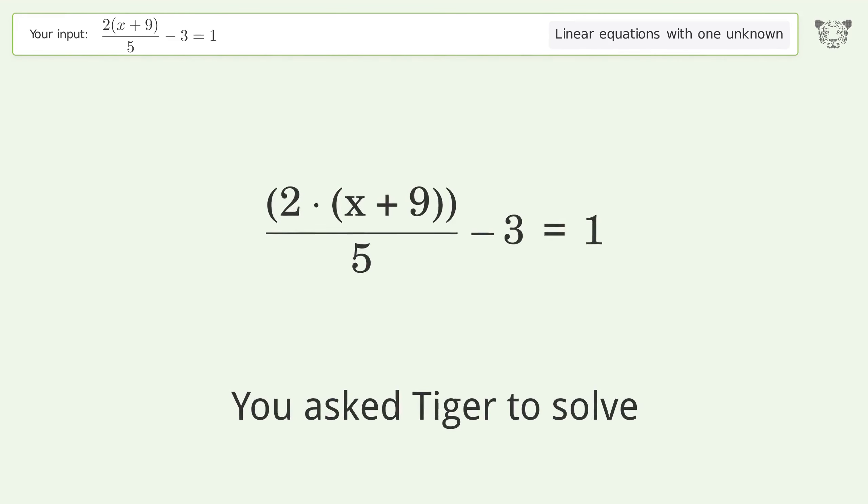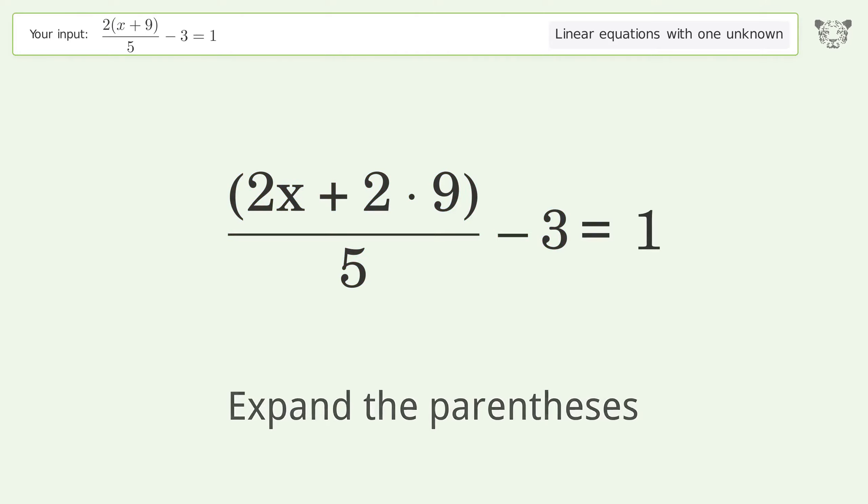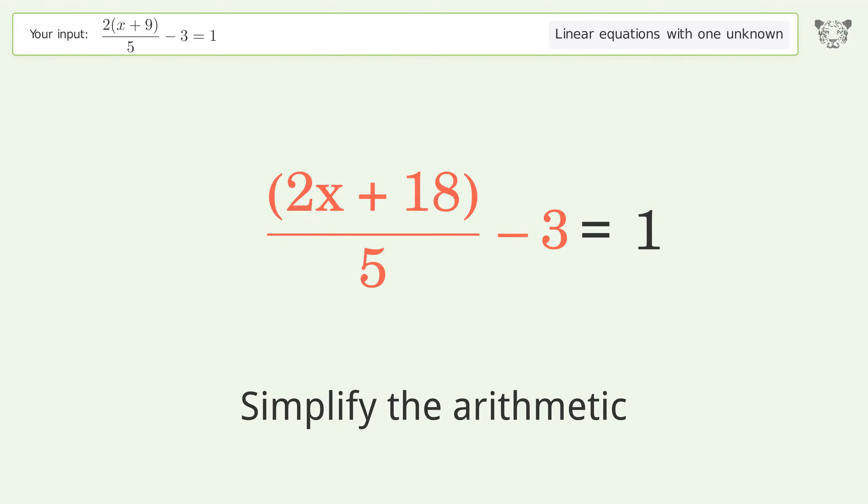You asked Tiger to solve this. This deals with linear equations with one unknown. The final result is x equals one. Let's solve it step by step. Simplify the expression, expand the parentheses, simplify the arithmetic, break up the fraction.